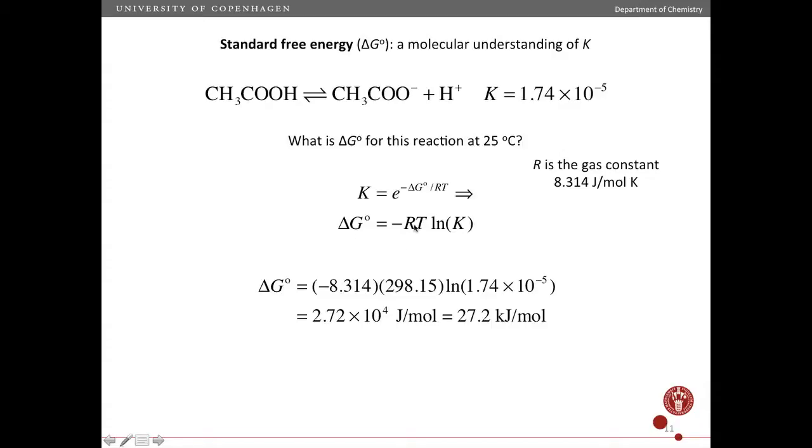So now we just need to plug in the values. So we have minus, here's the gas constant. And when we work with temperature, we have to always convert it to Kelvin. So 25 degrees is 298 Kelvin. And finally, we take the natural log of the equilibrium constant. And that gives us this value.